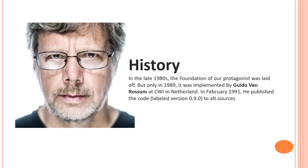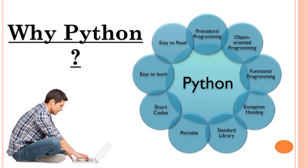Let's start with the brief history of Python. It was the late 80s when the foundation of Python came into the mind of Guido van Rossum. It was in the 90s when the first version of Python, that is 0.90, was published into alt.sources — that is when Python was born. It was in the 80s and 90s when Python got into play, but recently it got a lot of importance and a lot of buzz had been there in Python communities.